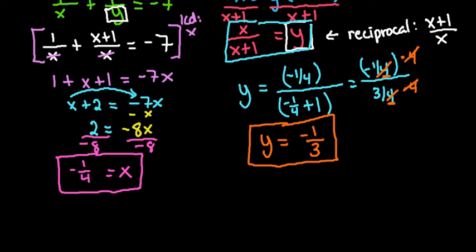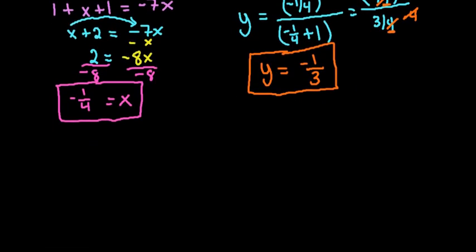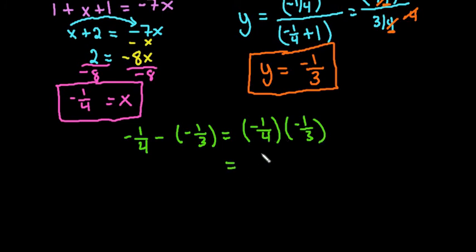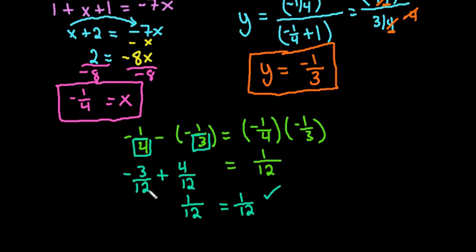Now we have our two values. It's always a good idea to check that this works. Is negative 1 fourth minus negative 1 third equal to their product? The product side is easier - negative 1 fourth times negative 1 third equals 1 twelfth. For the left side, using LCD of 12: negative 3 twelfths plus 4 twelfths equals 1 twelfth. So the first equation checks out.